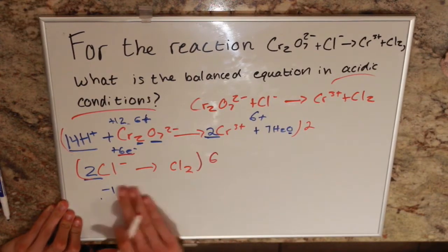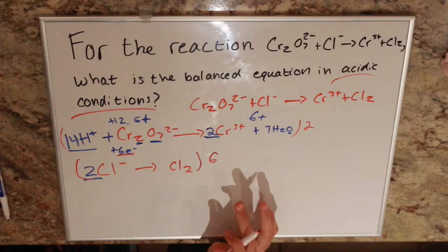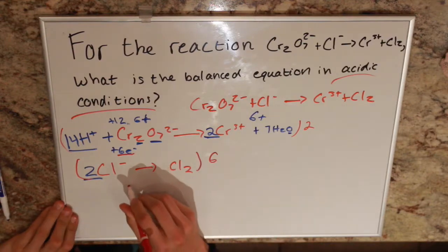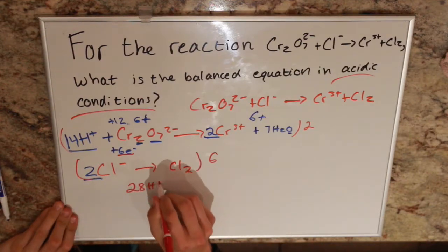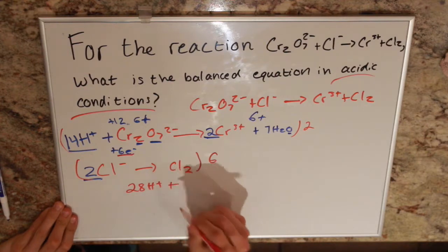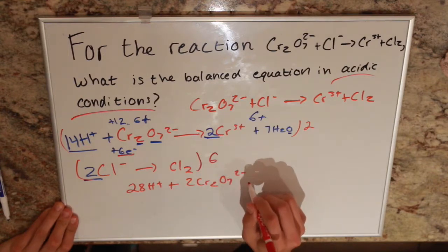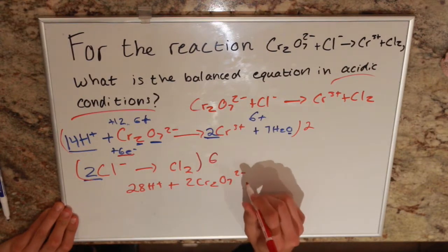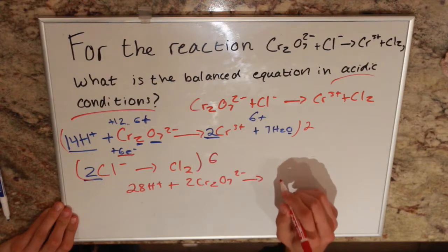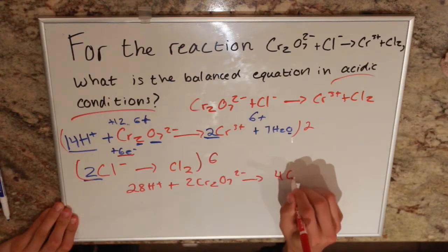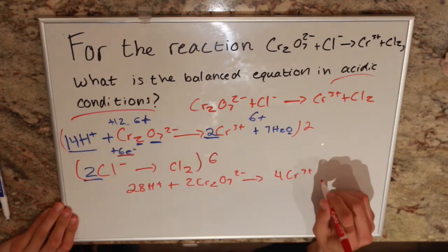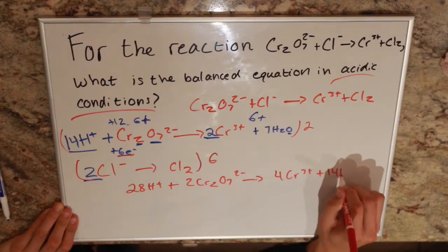So we get 28 H+ plus 2 Cr2O7 2- yields 4 Cr3+ plus 14 H2O.